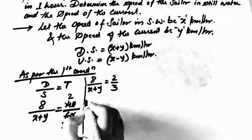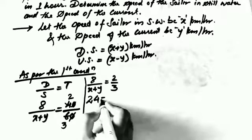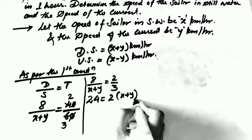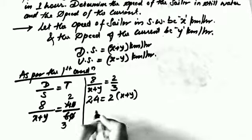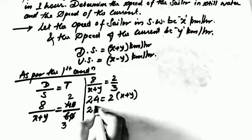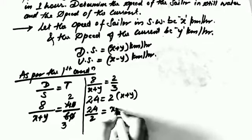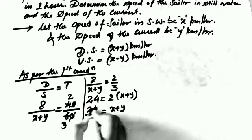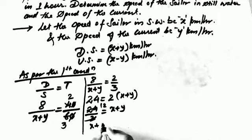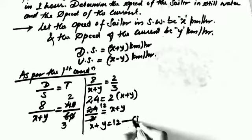Cross-multiplying: 8 times 3 equals 24, and 2 times (x plus y). Transposing, 24 divided by 2 equals x plus y, so x plus y equals 12. This is Equation 1.